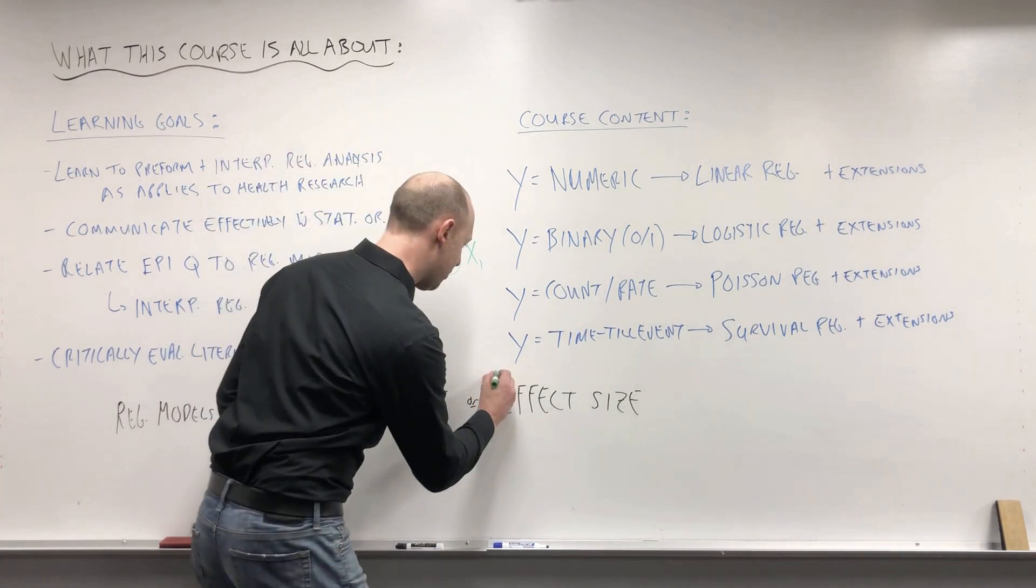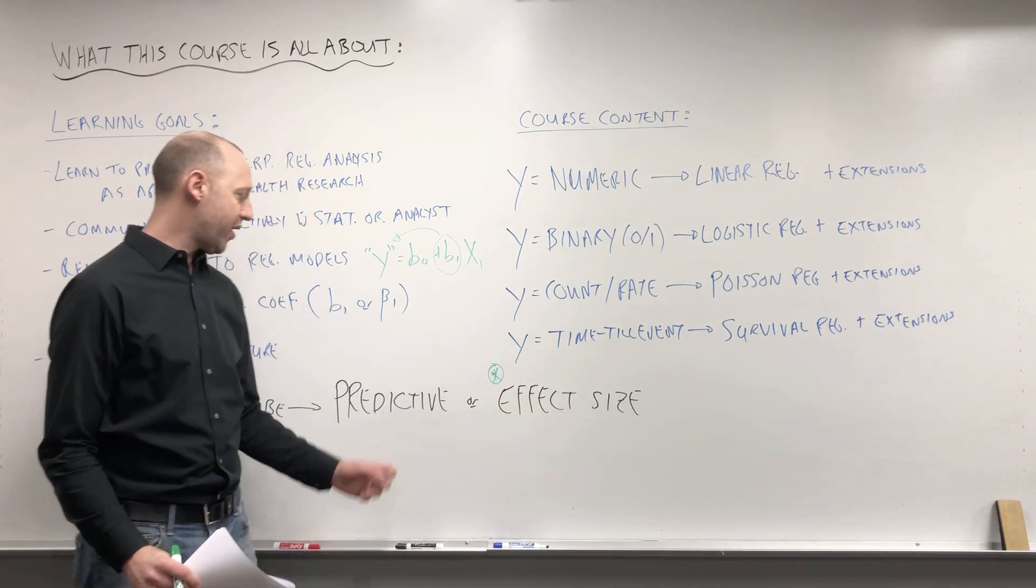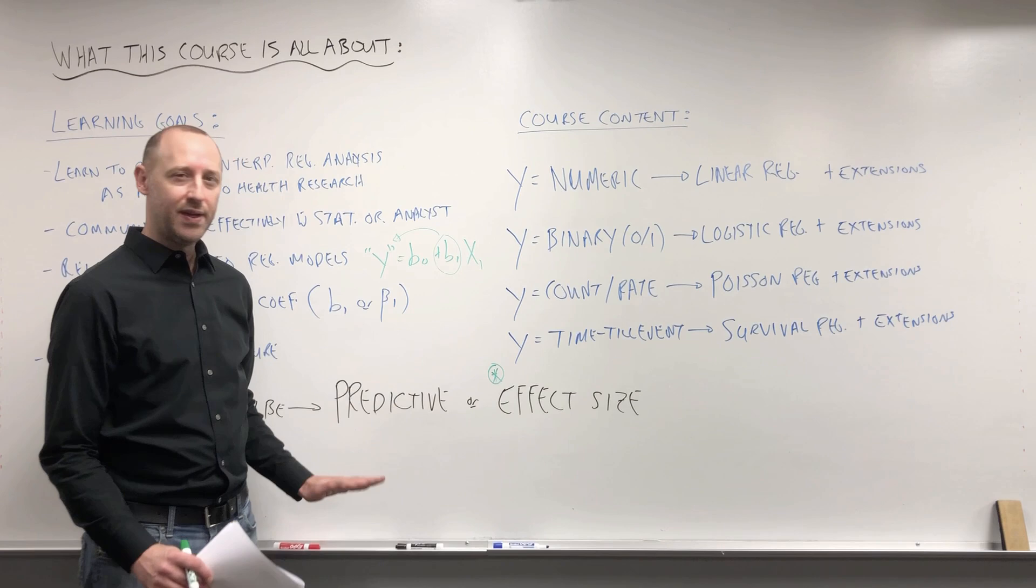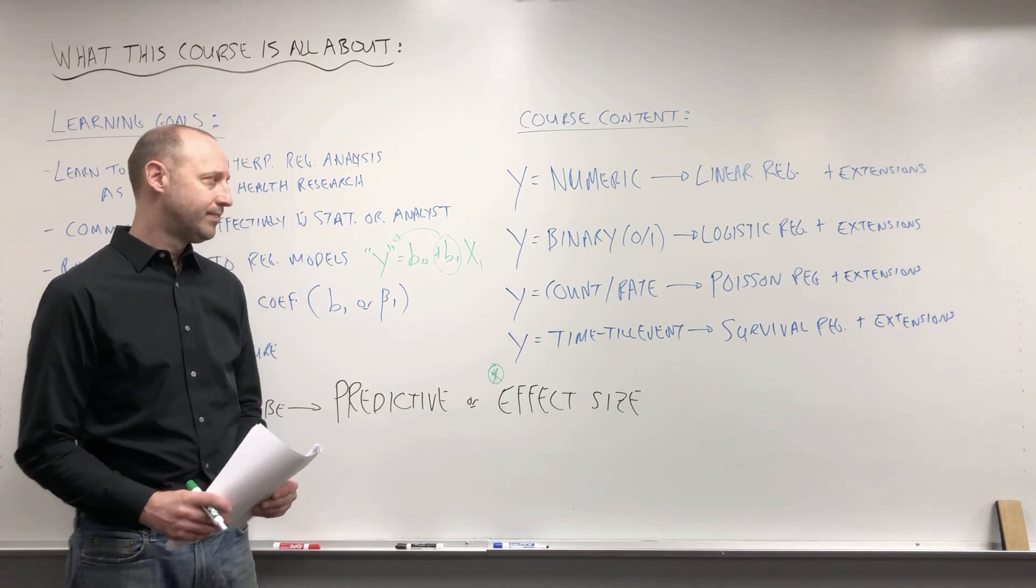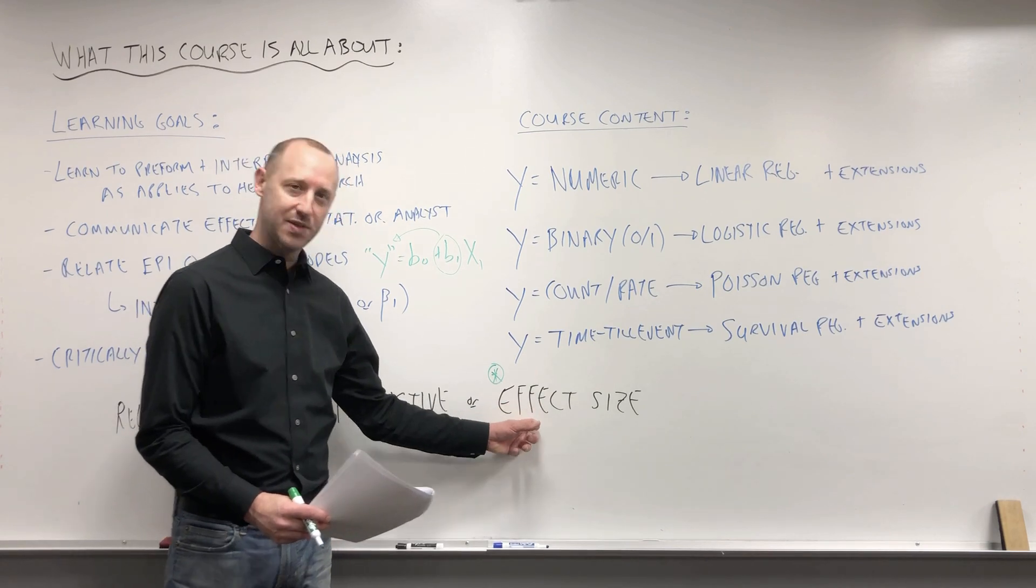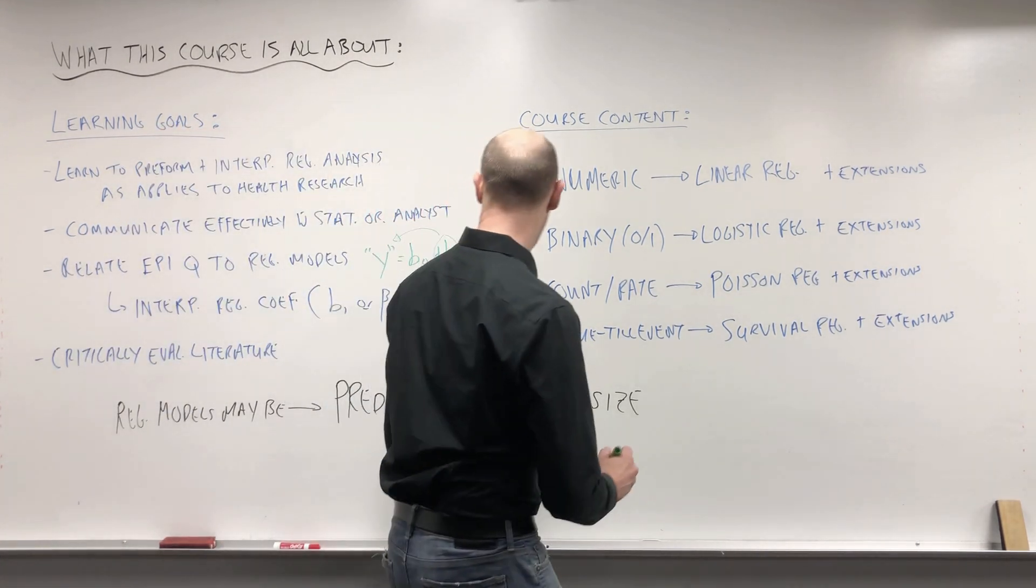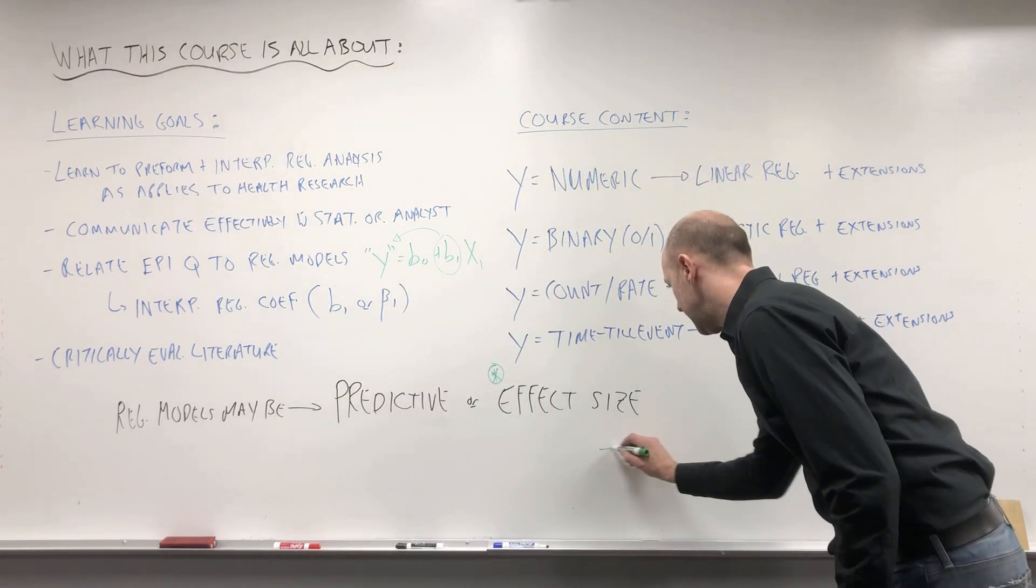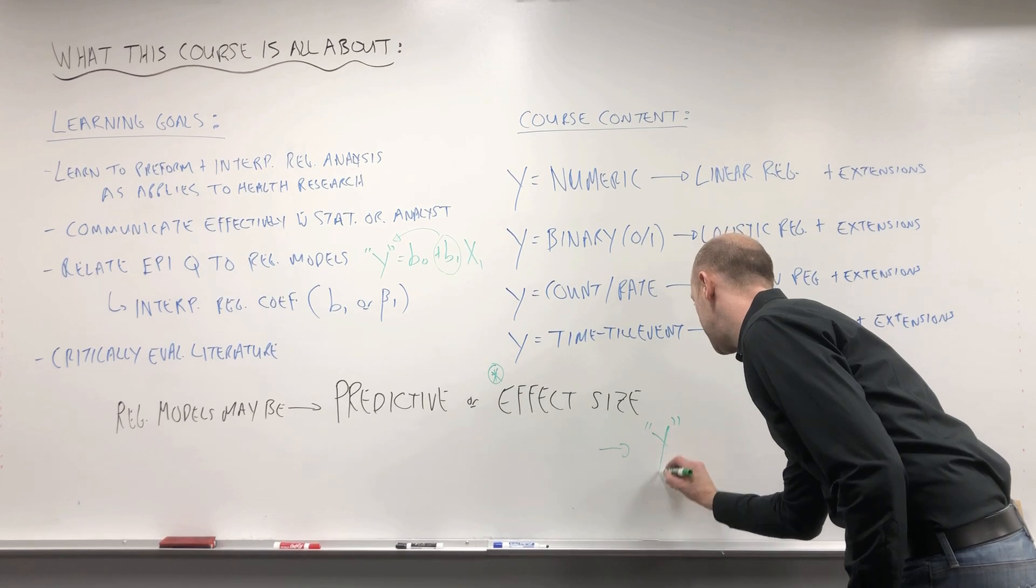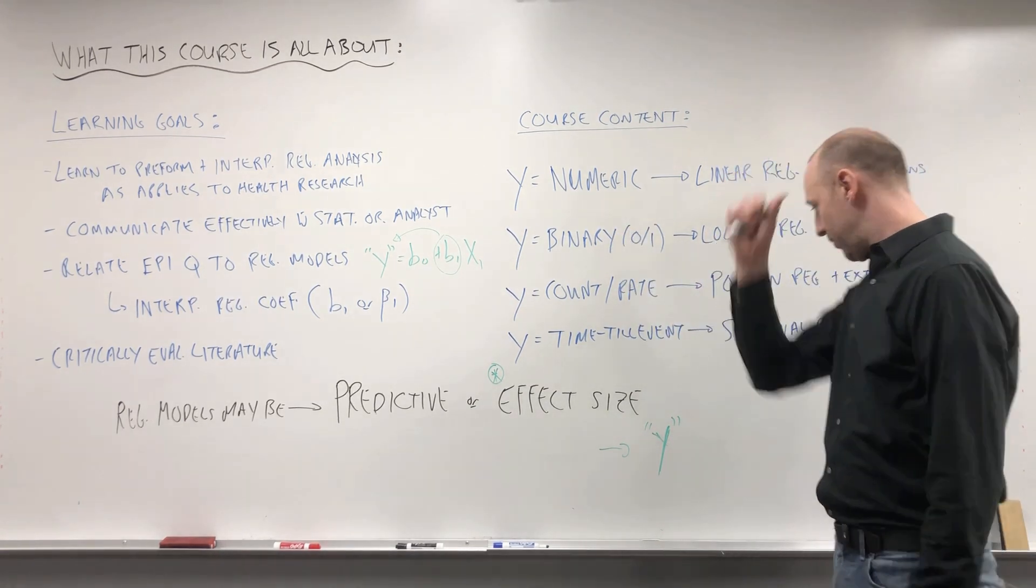We're going to focus mostly in the course on trying to estimate the effect size, but we are going to touch on predictive models as well. I'll always try and point out the ideas we use for selecting variables if it's an effect size model or a predictive model, which is going to be a little bit different. Here's our outcome - I'm putting it in quotes to keep it general, meaning it can be any particular type of outcome variable - and regression models typically look like this: B0 plus B1 X1 plus B2 X2 and so on.